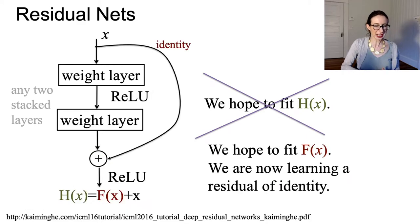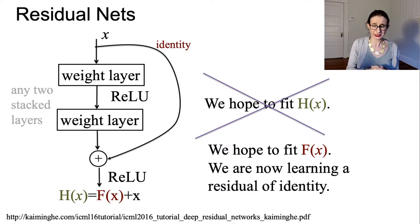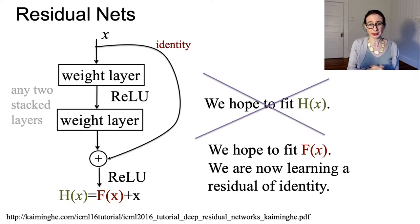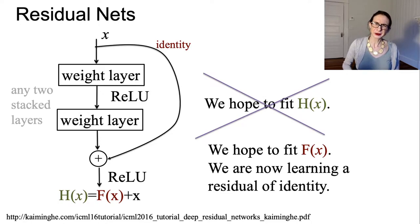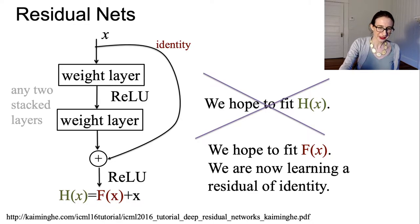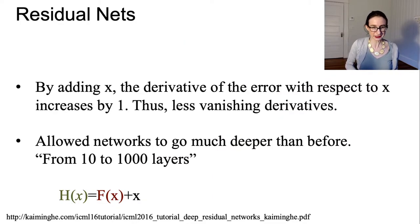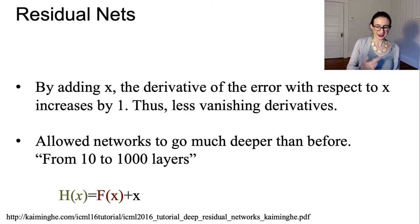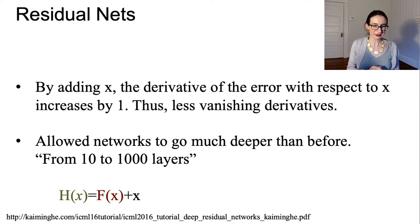In residual nets, they keep an extra copy of x around and it's always available as a feature. You're now modeling f(x), which is the residual of x, and you hope that f(x) plus x is a good model for the label y — you're learning a residual of identity. This helps with the vanishing gradient problem: when you take the derivative of the error with respect to x, that derivative increases by 1 because of the added x, giving you less vanishing derivatives.